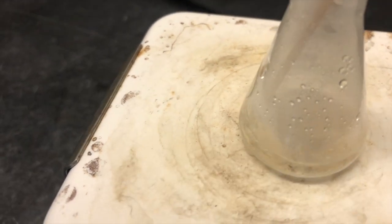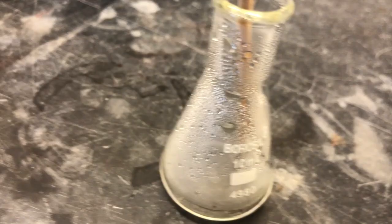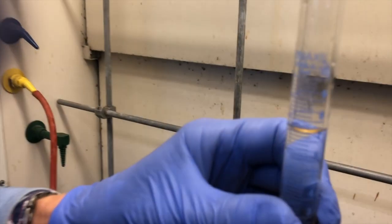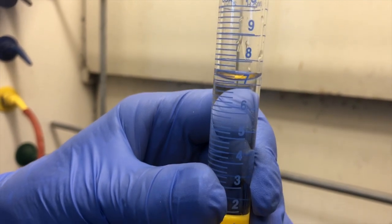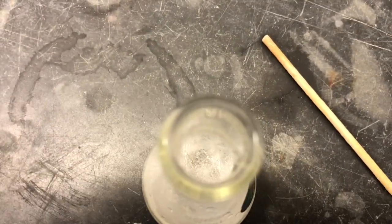Once we're sure that all of the solid has dissolved it will be safe to take it off the heat. At this point we can measure with the graduated cylinder how much water is left and determine how much water was added to this mixture. You can see this solution cooling slowly on the bench top. We remove the boiling stick and within just a few seconds the crystals begin to form.